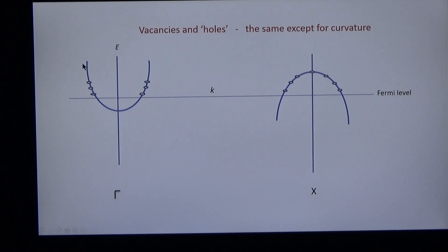When the dispersion is positive, as in its typical gamma point, the Hall coefficient is negative. And when the dispersion curvature is negative, as typically on the x-point in the Brillouin zone, the Hall coefficient is positive.